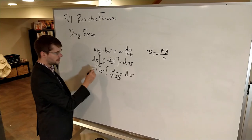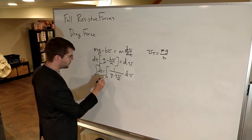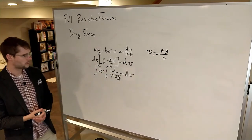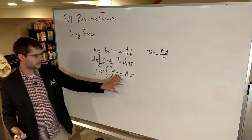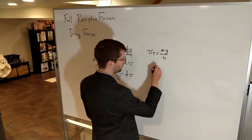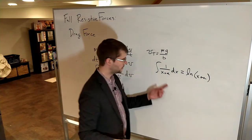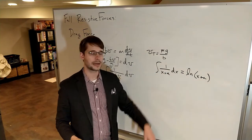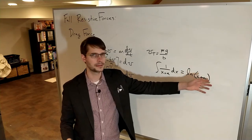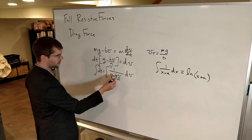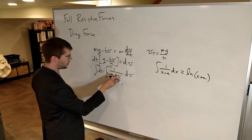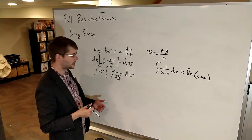We integrate from 0 to t for time on one side, and from 0 to v on the other side. I'll rewrite this using the integral identity that the integral of 1 over (x plus a) dx equals the natural log of (x plus a). Since v is the x in this case, I'll pull out a factor of negative b over m from the denominator.